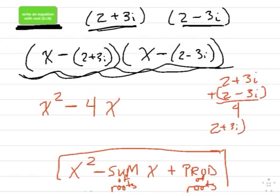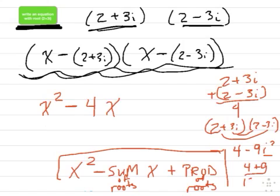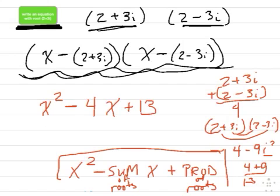And what's the product of those two roots? What's 2 plus 3i times 2 minus 3i? This is nice, because the middle terms cancel out, and you just get 4 minus 9i squared. And what's i squared? Negative 1. So it's just 4 plus 9, which is 13. There's your equation.